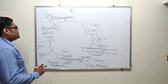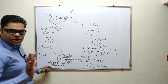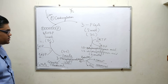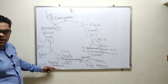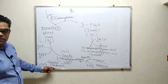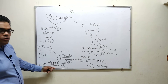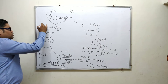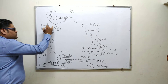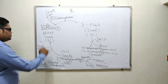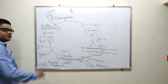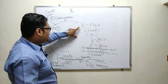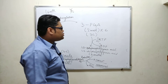Now let's understand the bioenergetics of the Calvin cycle. Glucose is a six-carbon compound (C6H12O6), so to form one glucose molecule we require 6 moles of CO2 to combine with 6 moles of RuBP — giving a total of 30 carbons. After carboxylation we get 12 moles of PGA, accounting for 36 carbons (12 × 3). This requires 12 ATP being converted to 12 ADP.